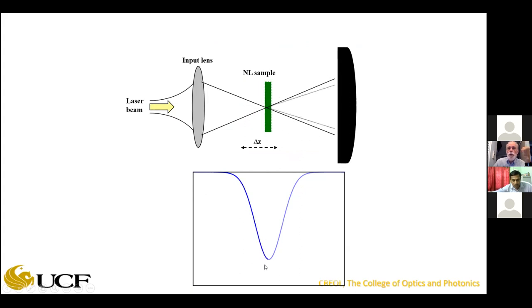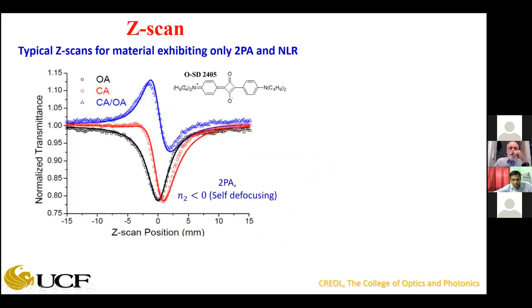As you get toward the focus, you see the nonlinear absorption — for example, two-photon absorption. Here's a nice feature: here's an example of a sample where we worked very hard performing multiple experiments to show this was all bound electronic. Here's the open-aperture z-scan in black, and here's the closed-aperture z-scan — you can see it's trying to defocus, but the nonlinear absorption is dragging that signal down. If we simply divide the closed-aperture z-scan by the open-aperture (black) curve, it negates the effect of nonlinear absorption, and you get a curve that looks like a closed-aperture z-scan in the absence of nonlinear absorption, showing self-defocusing.